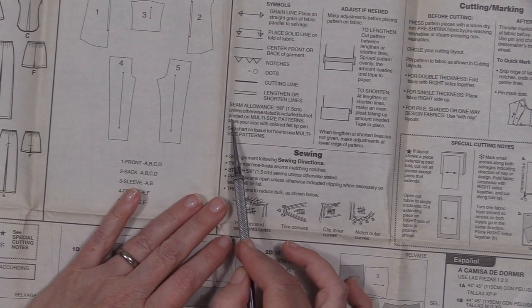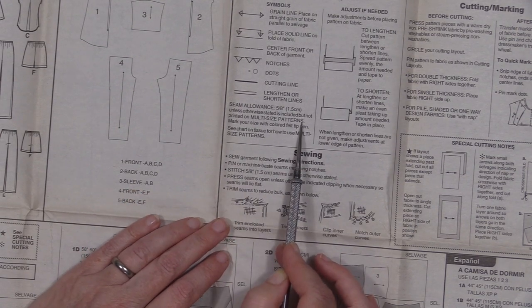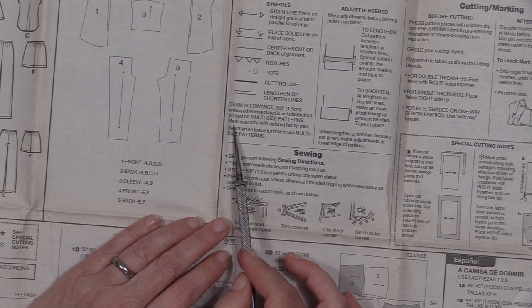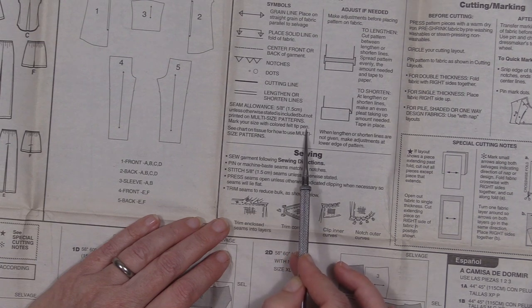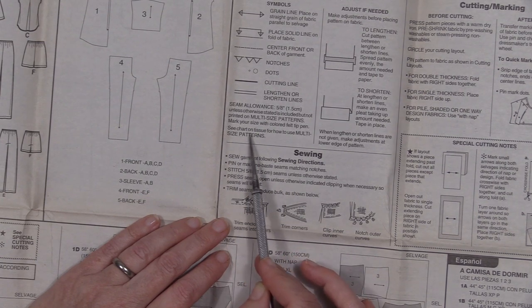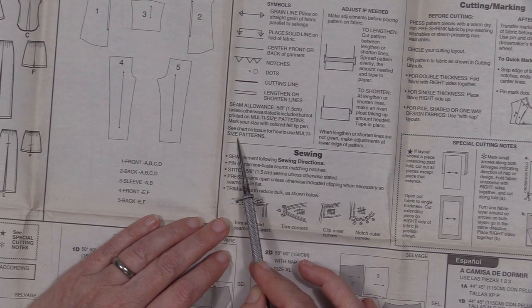The seam allowance it tells you is also printed on the multi-size patterns and we're going to mark our size with a colored felt tip pen. See the chart on the tissue for how to use the multi-size pattern, so I'll show that to you when we start working with the pattern pieces.